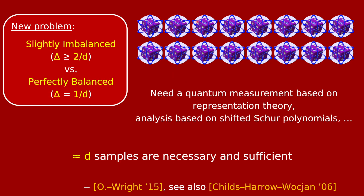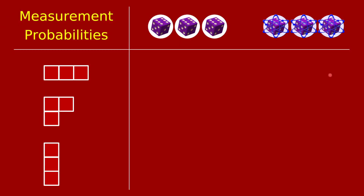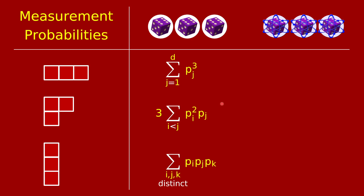To understand the best measurement on many quantum dice requires representation theory, so let's start with the next simplest case: three copies of the die, be it quantum or classical. In the classical case with three dice, you'd roll them and only need the sorted histogram information. The three histogram shapes are: all three faces the same; one face occurred twice and a different face once; and all three rolls distinct.